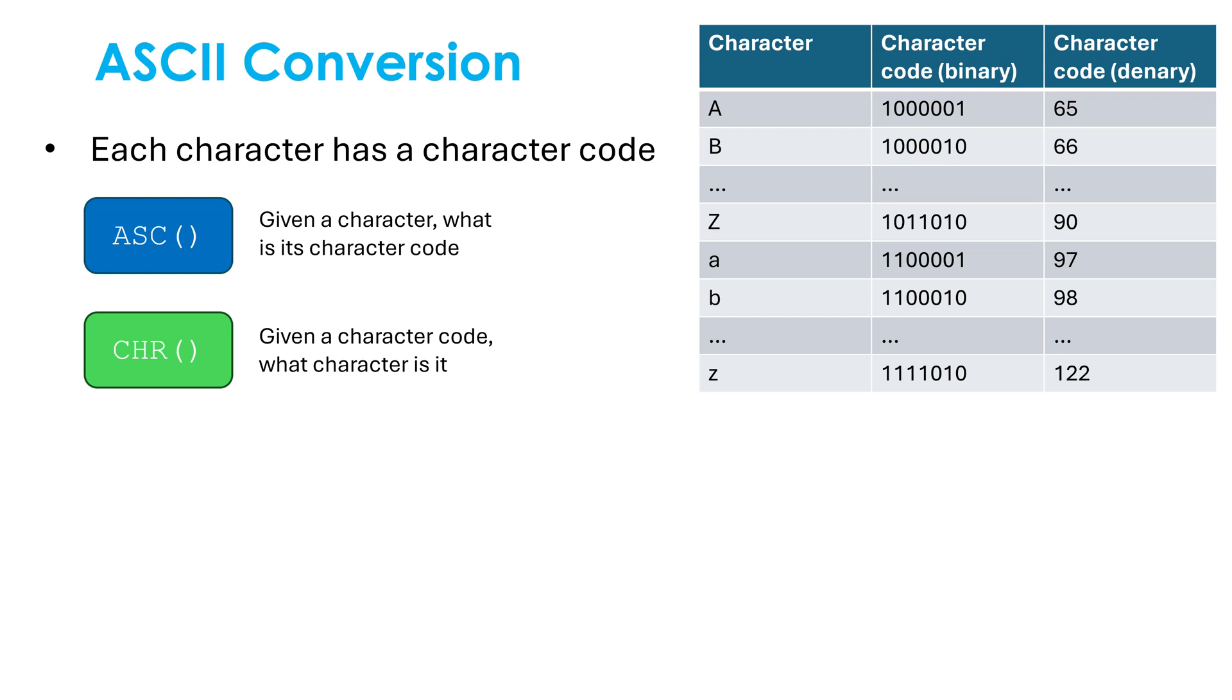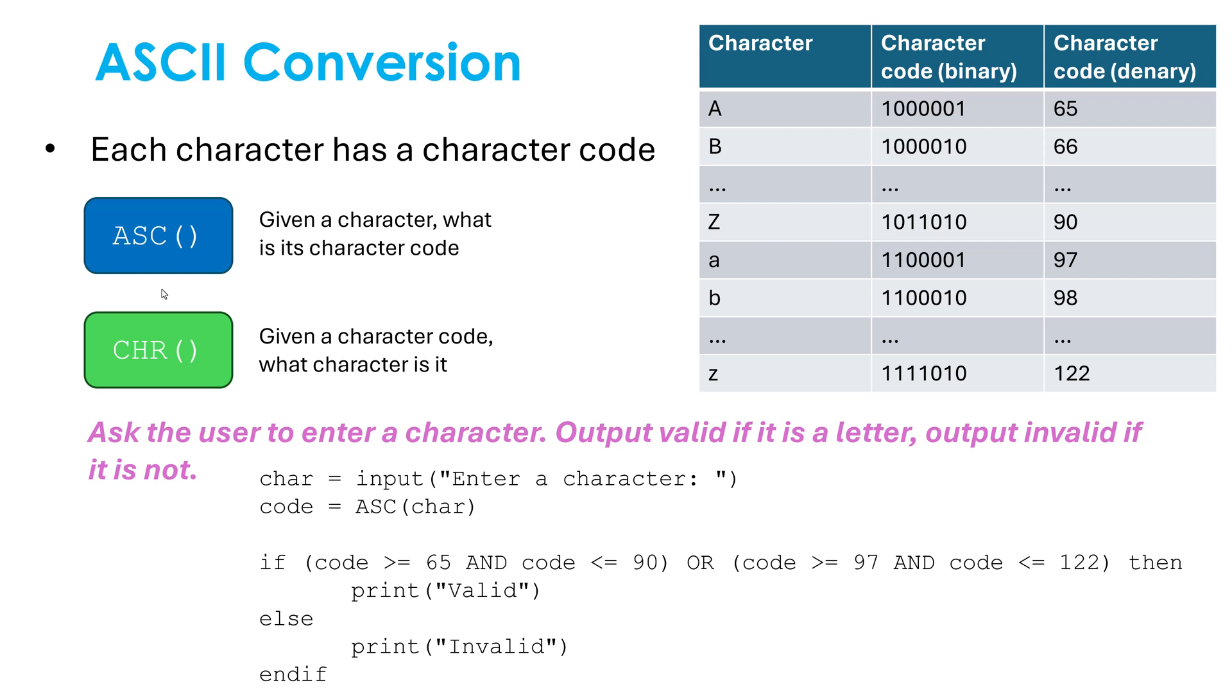To give you an example of where you might need to use one of these, well let's say we're asking the user to enter a character. We're going to output valid if it is a letter, and output invalid if it is not a letter. So we could use our knowledge of the ASCII table, also our knowledge of these two subprograms to be able to do this check, which will just be an if statement. It's either going to be valid or invalid, how do I check? Here's how I would go about doing it. I'm asking for the character. I'm then finding the ASCII code for that character. So I'm using the ASCII subprogram here. CHR is used less often, but it could be used. But here I'm finding out the character code for this character.